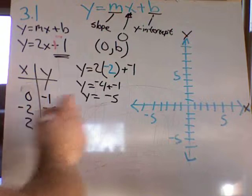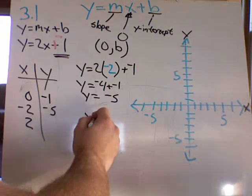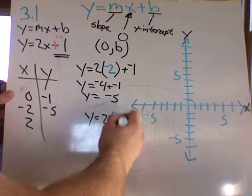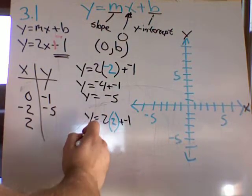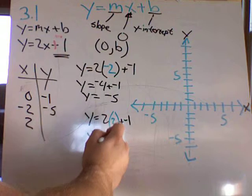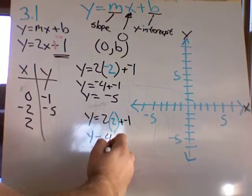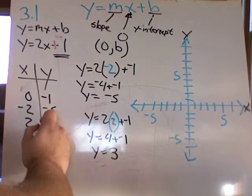You can do it again. This time I'm going to say x is a 2. So y equals 2 times 2 plus negative 1. So 2 times 2 is a 4, plus negative 1 would be 3. So when x is a 2, y is a 3.